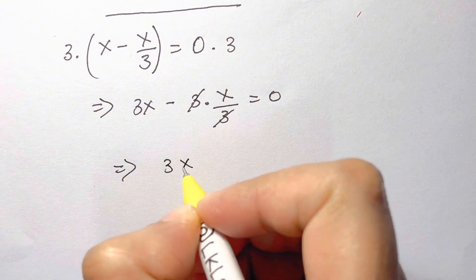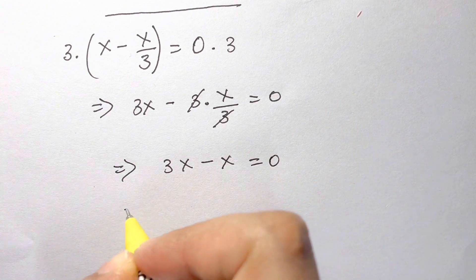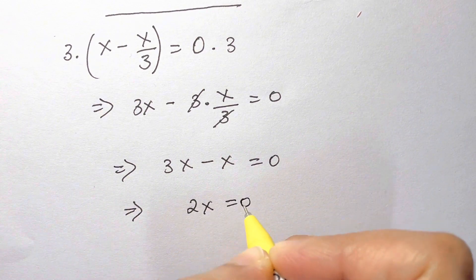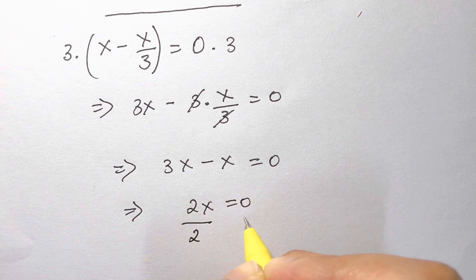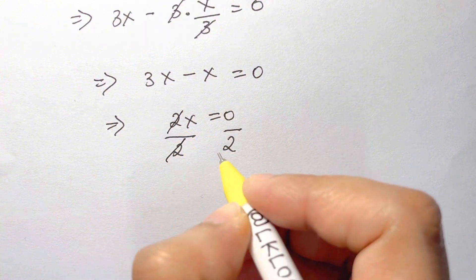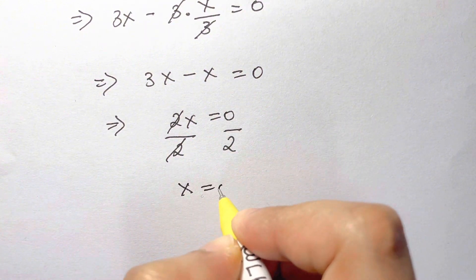So you have 3x minus x equals 0, and 3x minus x is 2x equals 0. Divide both sides by 2, so you get the value of x by canceling out the 2s. So x is equal to 0.